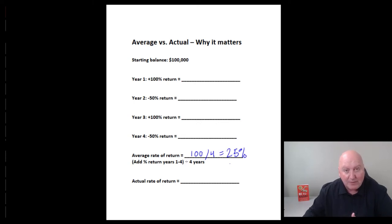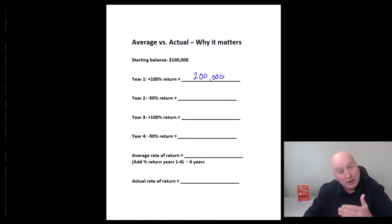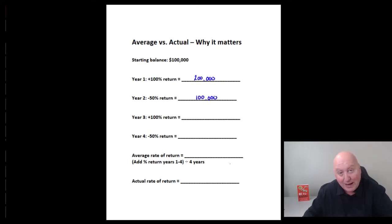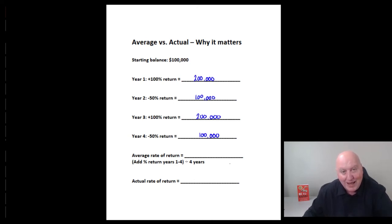Let's do the math here. Let's pretend you had $100,000 when you started. First year, you doubled your money — now you're up to $200,000. Second year, you lost half your money, a 50% loss, but you're back to $100,000. Year three, another great year — up 100%, $200,000. Year four, you lose 50% again — back to $100,000.